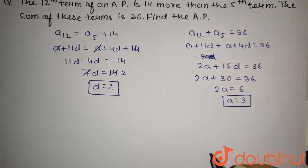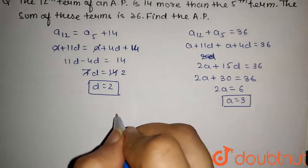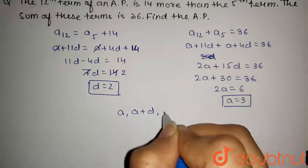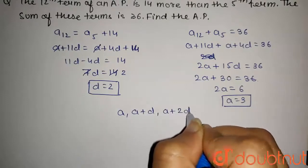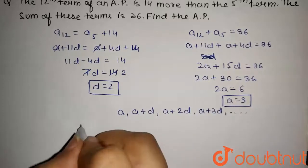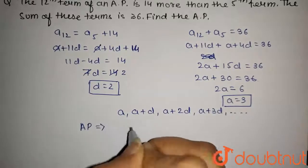Now, we have to find the AP. So the AP can be written as A, A plus D, A plus 2D, A plus 3D, and so on. So the given AP will be A, that is 3.